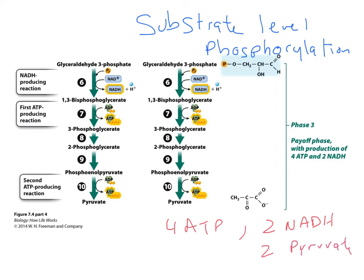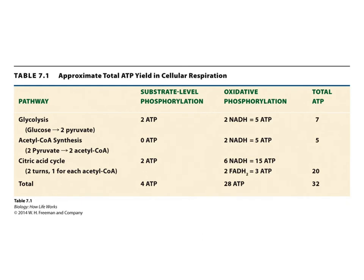From the payoff phase: we got four ATPs, two NADH, and two pyruvates. But remember, we consumed two ATPs in the investment phase, so we only have two net ATP gained. Glycolysis gives two ATP by substrate-level phosphorylation and two NADH from oxidative phosphorylation, which will eventually be equivalent to five ATP — so the equivalent of seven total ATP. Acetyl-CoA synthesis gives no ATP but two NADH, convertible to five ATP. The citric acid cycle gives two ATP, six NADH, and two FADH2, totaling about 20 ATP.